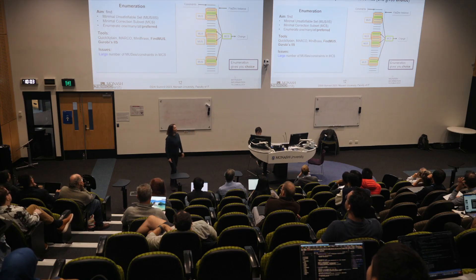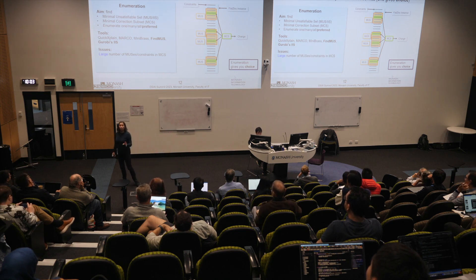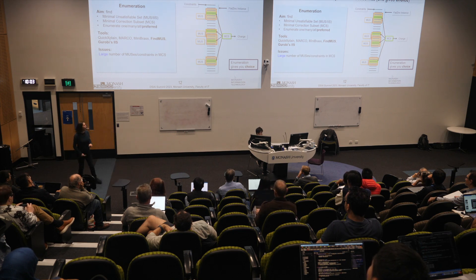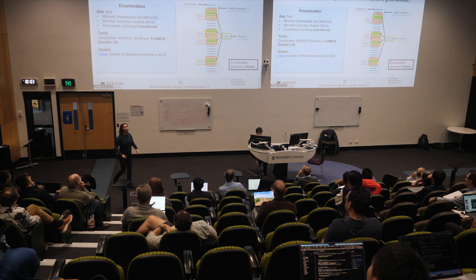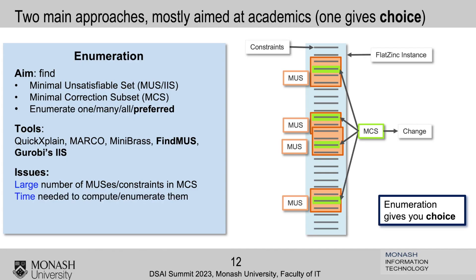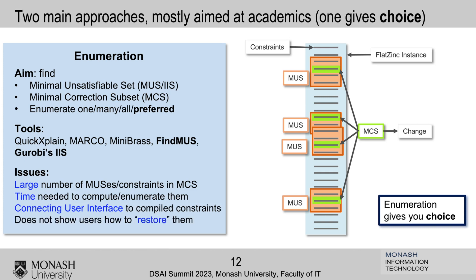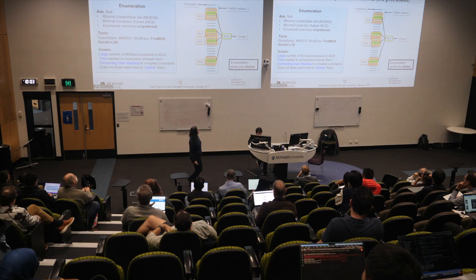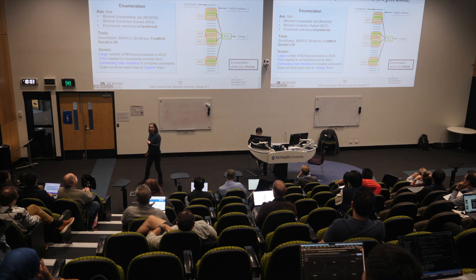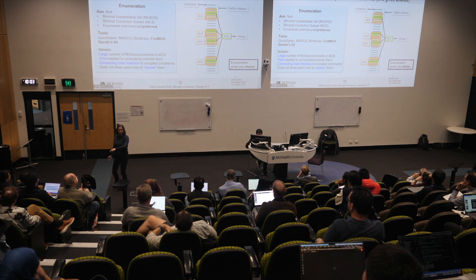Issues: in real life, in something like a plant layout, you have a massive amount of MUSes and they are really overwhelming for users. Computing and enumerating all of them — particularly if you want all of them — takes forever. Connecting the high-level user interface all the way down to the flat, assembler-equivalent solver code is not easy. And it doesn't tell you how to fix it — it's equivalent to saying there's no land connection between Australia and Madrid, but not how to resolve it.